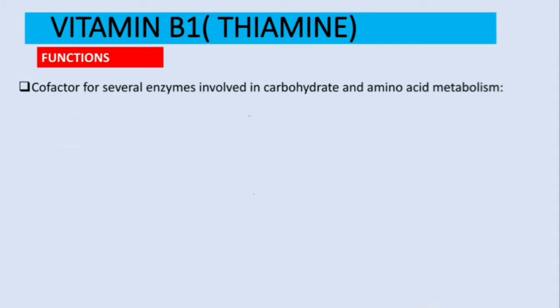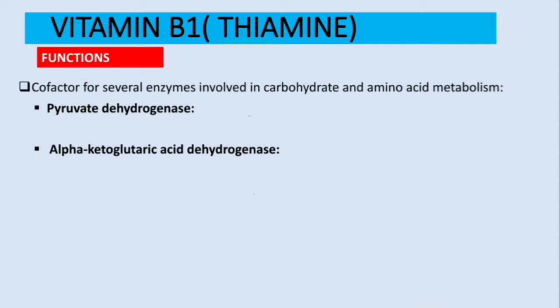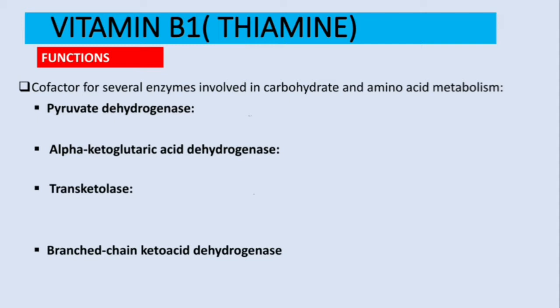There are four enzymes for which thiamine acts as a cofactor: pyruvate dehydrogenase, alpha-ketoglutarate dehydrogenase (also called alpha-ketoglutaric acid dehydrogenase), transketolase, and branched-chain ketoacid dehydrogenase.